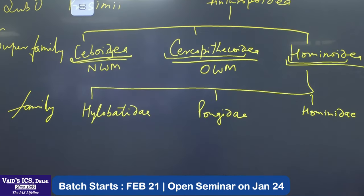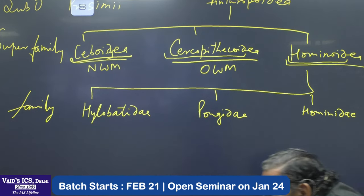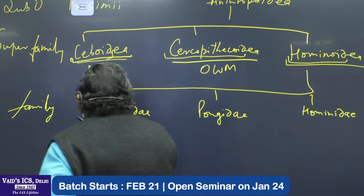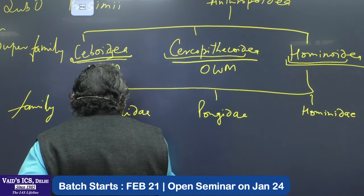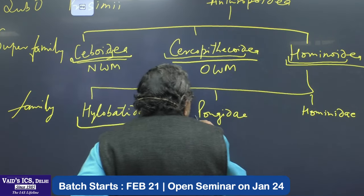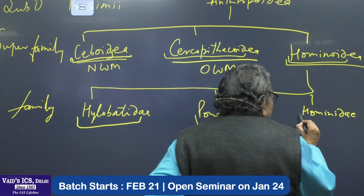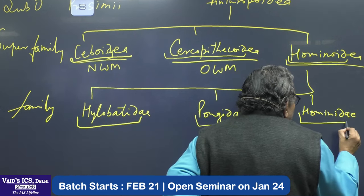Members are called '-ids' — Hylobatids, Pongids, Hominids — obviously in plural form.